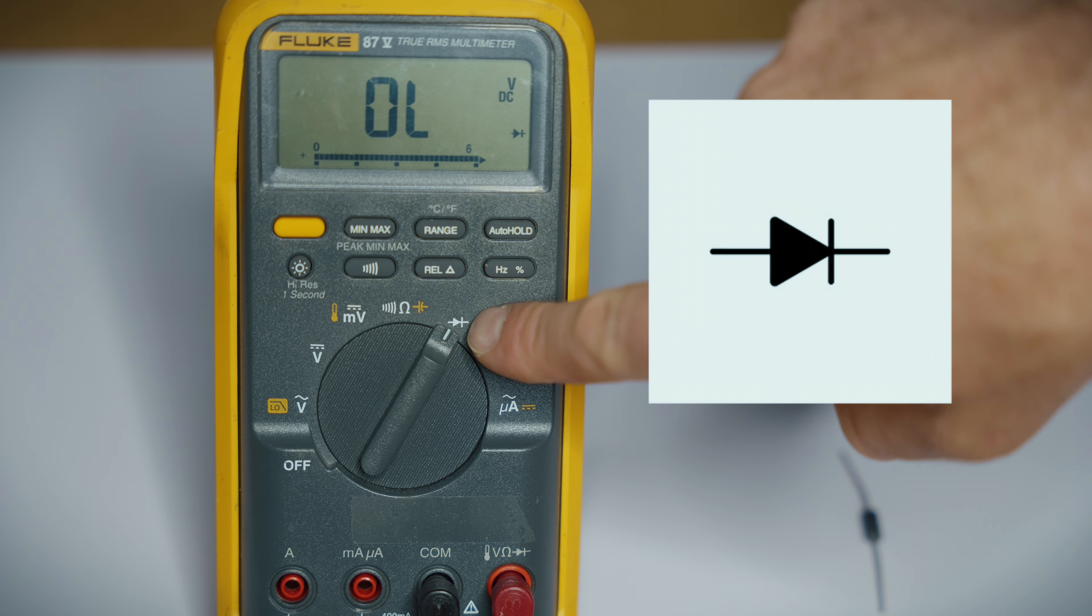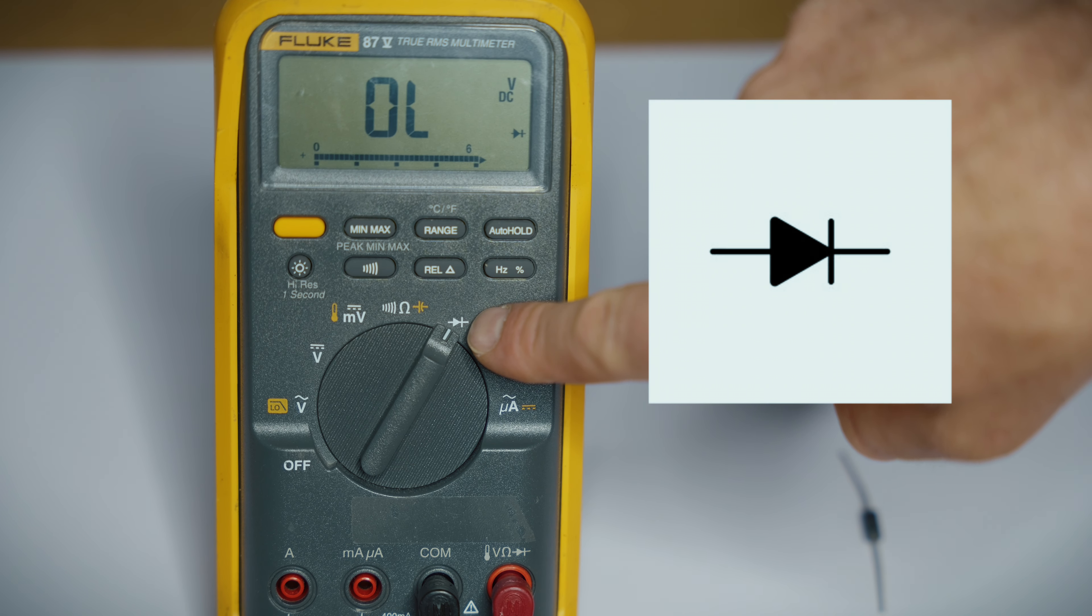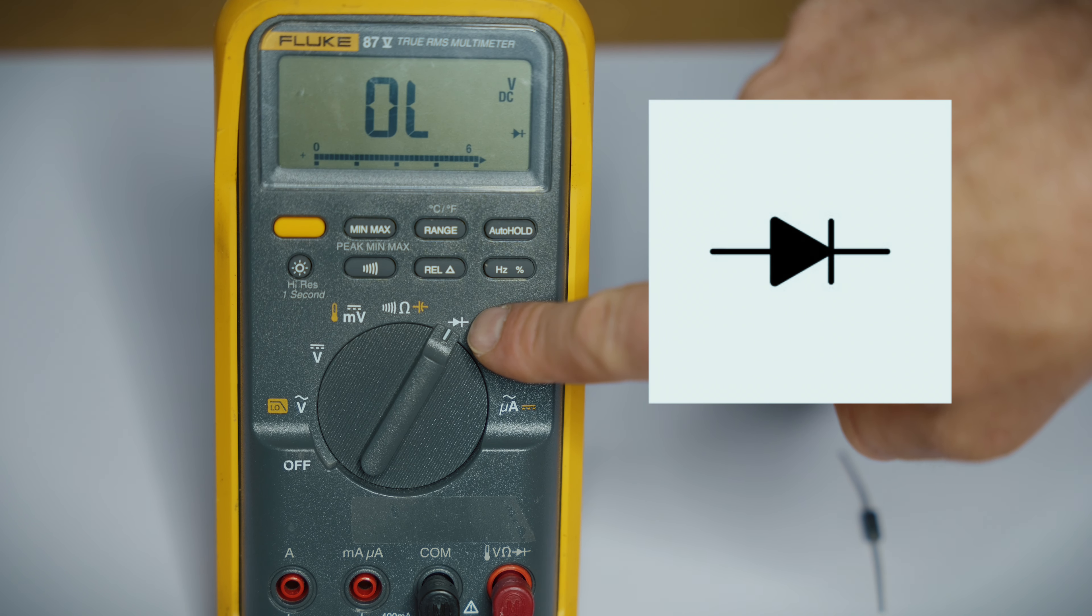Our next setting is going to be the diode setting. That's the one that looks like an arrow with a line. A diode is a component in a circuit that only allows electricity to flow in one direction.